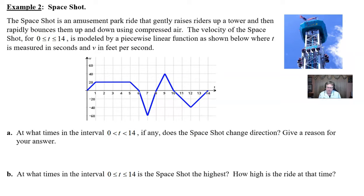So what we've got is that the Space Shot is an amusement park ride that gently raises riders up a tower and then rapidly bounces them up and down using compressed air. Well, that sounds like fun. The velocity of the Space Shot for time 0 to 14 is modeled by a piecewise linear function as shown below, where t is measured in seconds and v in feet per second. So let's take a look at our Part A.